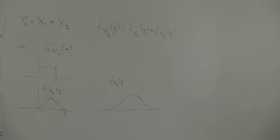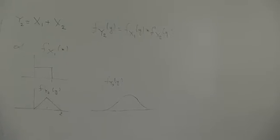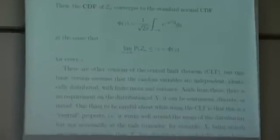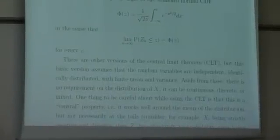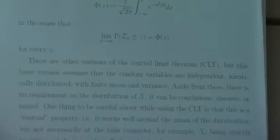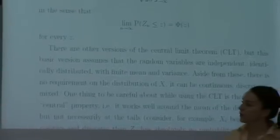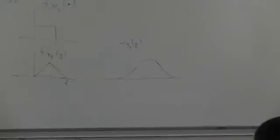And that gave a hint about convergence to a Gaussian. That's really the underlying reason why we have central limit theorem. So, now, there are other versions of the central limit theorem. But this basic version assumes that the random variables are independent, identically distributed, with finite mean and variance. And aside from this, there is no requirement on the distribution of x. It can be continuous discrete. So, in this example, they are continuous and we can really see the bell curve taking shape.